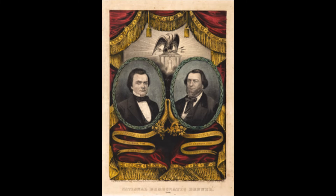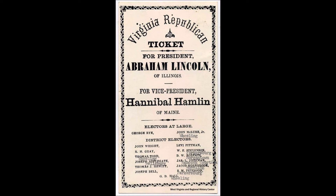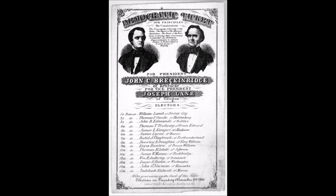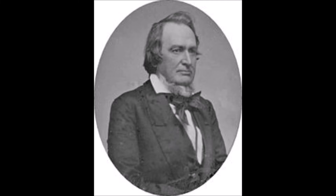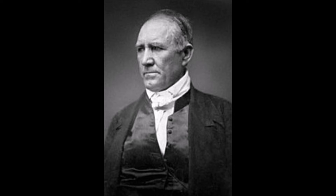The 1860 party tickets were as follows. Democrat: U.S. Senator Stephen A. Douglas for President and 41st Governor of Georgia Herschel V. Johnson for Vice President. Republican: Former U.S. Representative Abraham Lincoln for President and U.S. Senator Hannibal Hamlin for Vice President. Southern Democratic: 14th Vice President of the United States John C. Breckenridge for President and U.S. Senator Joseph Lane for Vice President. Constitutional: Former U.S. Senator John Bell for President and Former U.S. Senator Edward Everett for Vice President. Liberty Party: Former Representative Jared Smith for President. People's Party: Governor of Texas Sam Houston for President.